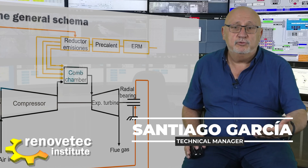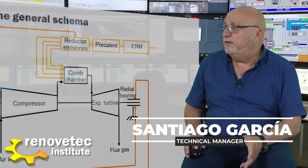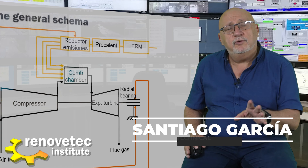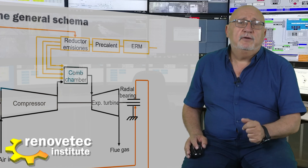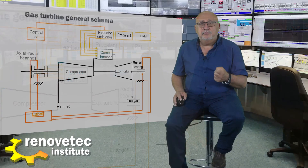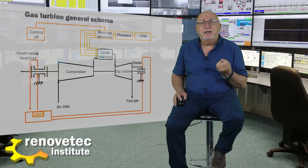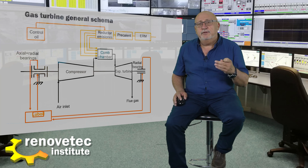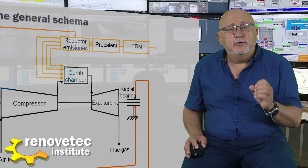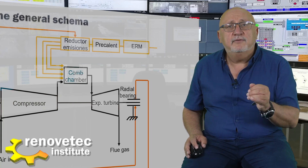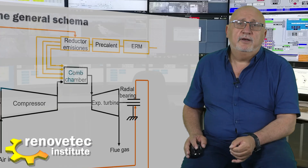To regulate the amount of gas entering the turbine, sometimes we have a control oil system to regulate this valve. We can regulate the valve with air, with an electric device, or with oil, but the most accurate system is to have a control oil system with a valve activated by oil.